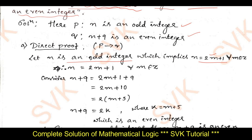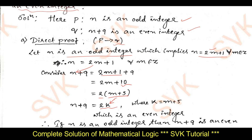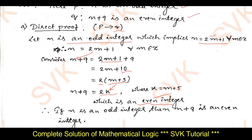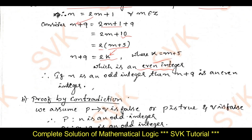Now consider n+9. Substituting n = 2m+1, we get n+9 = 2m+1+9 = 2m+10 = 2(m+5). Let k = m+5, so n+9 = 2k. Since 2k is an even integer, I have proved that if n is an odd integer, then n+9 is an even integer. Hence, by direct proof, the statement is established.